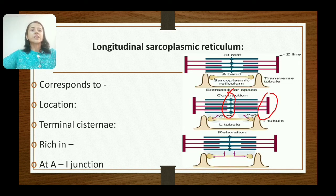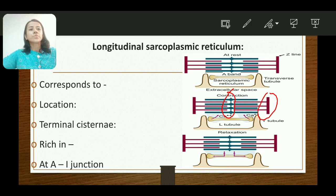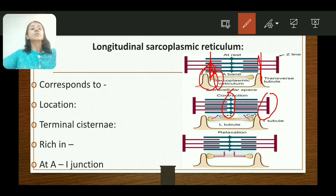As seen in the diagram, the T-tubule and terminal cistern are present at the junction of the A-band and I-band. There are two A-I junctions per sarcomere. Therefore, in skeletal muscle, each sarcomere contains two T-tubules and two sarcotubular systems.